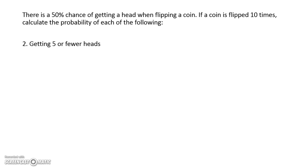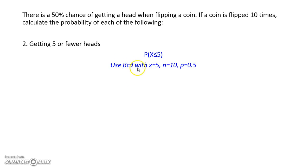In our second problem, we're looking at the probability of getting 5 or fewer heads. Again, let's start with probability notation — that helps us get clear in our mind what it is we're trying to calculate. So we're interested in the probability that x is less than or equal to 5. Because there's a less than or equal to sign here, we use BCD on our graphics calculator, with x equal to 5, n equal to 10, and probability equal to 0.5.